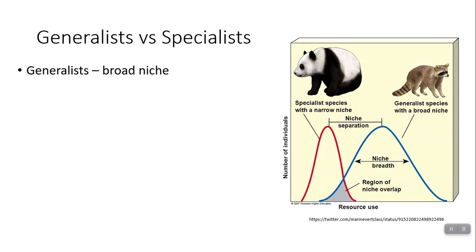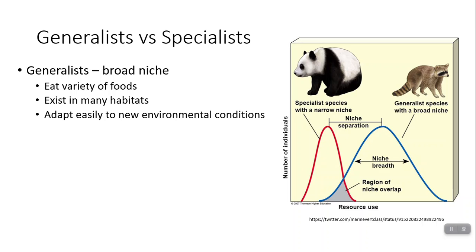So what's the relevance of this? Let's talk about generalists versus specialists — it's all about the niche. A generalist has a broad niche and can survive under a wider range of environmental conditions. They can eat a wider variety of foods and exist in many different habitats. If their environment changes, they can adapt pretty easily. Examples of generalists are rats, raccoons, roaches, and even humans. That's why humans have spread throughout a large part of the world. A lot of the species we tend to think of as pests are pests because they can survive in a lot of conditions.